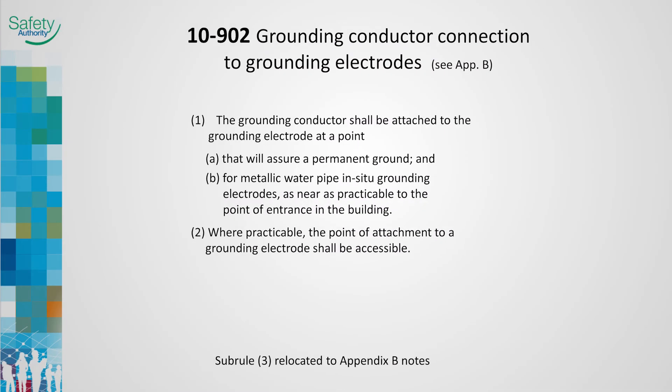This rule was formerly titled Grounding Conductor Connection to Water Pipe Electrodes. The title and scope has been changed and this rule now applies to all electrode types. Former sub-rule 3, found in the 2012 code, has been relocated into Appendix B as notes. Sub-rule 3 describes how the cold water system was to be bonded and made electrically continuous.